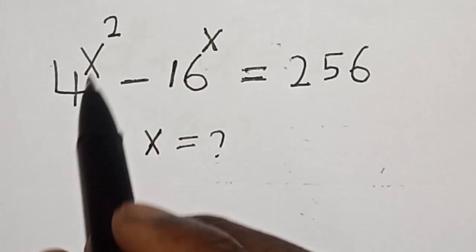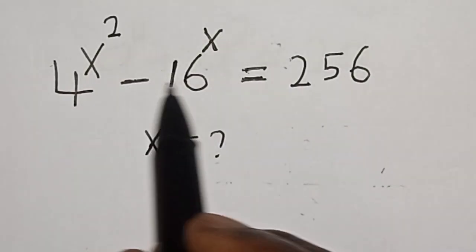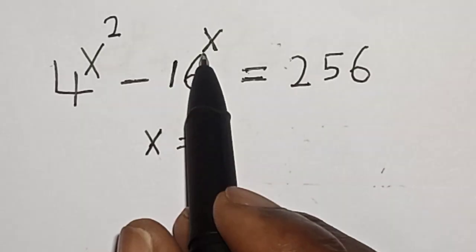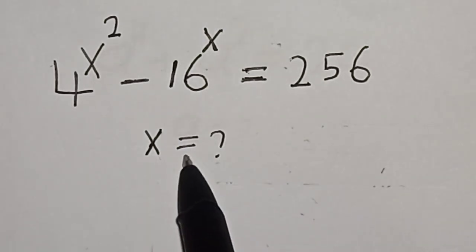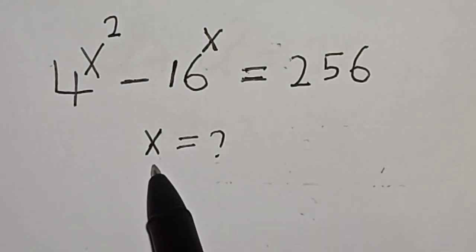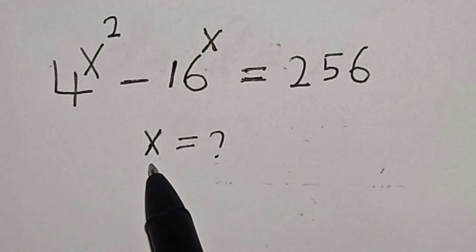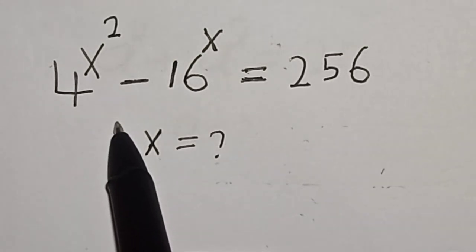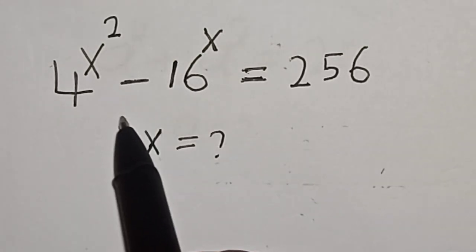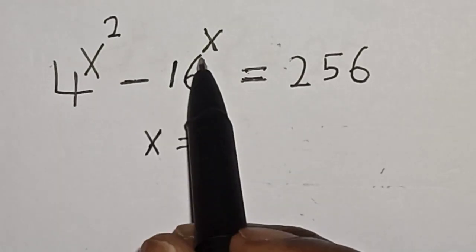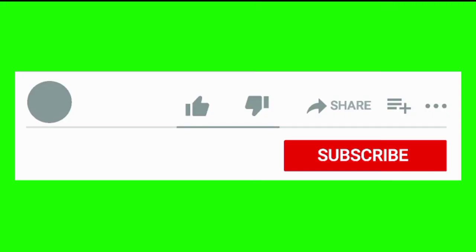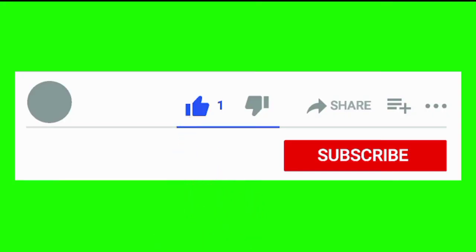4 raised to power s squared minus 16 raised to power s is equal to 256. What is the value of s? Welcome to my class. In this class we want to find the value of s from this equation: 4 raised to power s squared minus 16 raised to power s is equal to 256.